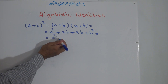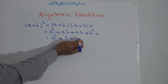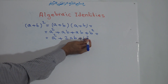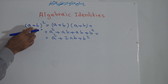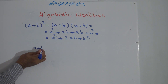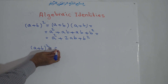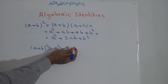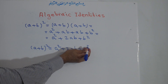Now, ab plus ab is 2ab. So the complete result is a squared plus 2ab plus b squared. This means we have found the formula for this kind of binomial: a plus b to the power of 2 is equal to a squared plus 2ab plus b squared.